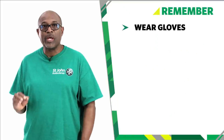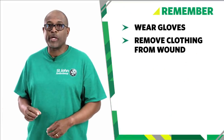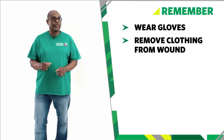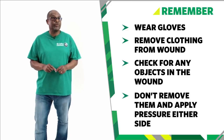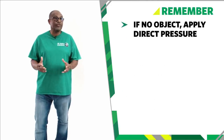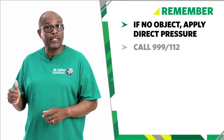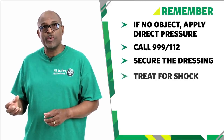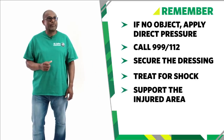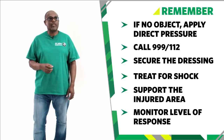Remember, when treating severe bleeding: wear gloves if available, remove or cut away any clothing from around the wound, check for objects in the wound but don't remove them — apply pressure on either side. If there is no object, use a dressing or pad and apply direct pressure. Call 999 or 112 for emergency help. Secure the dressing with a bandage. Treat the casualty for shock. Support the injured area. Keep checking their level of response while waiting for help. And that's how we treat someone with a severe bleed.